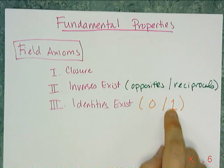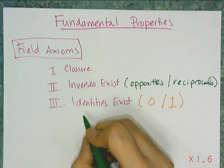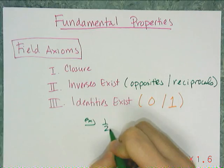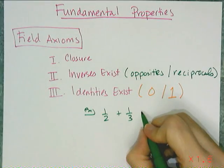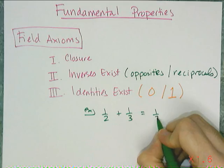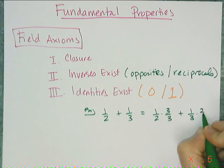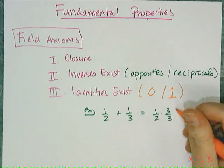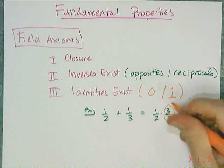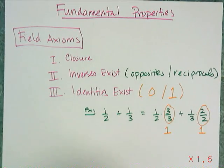You've already used the identity property. For example, if you have the fraction problem 1/2 plus 1/3, you know you need common denominators. So you take 1/2 and multiply it by 3/3, and take 1/3 and multiply it by 2/2. Well, 3/3 equals 1 and 2/2 equals 1 — so that's when you use the multiplicative identity.